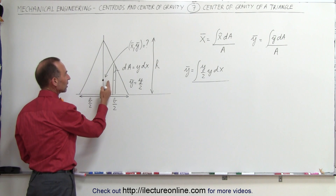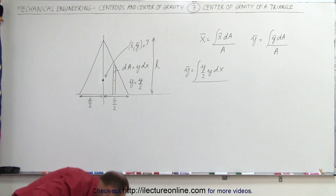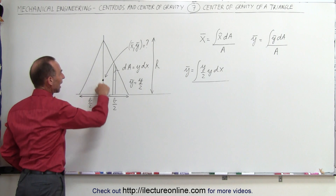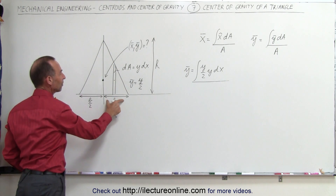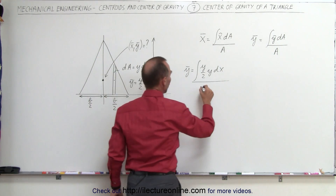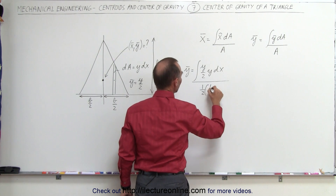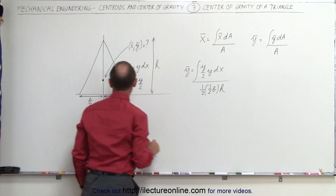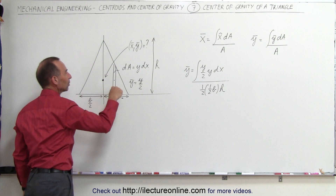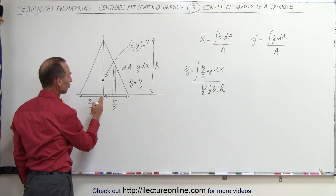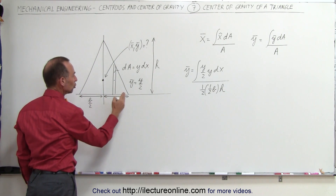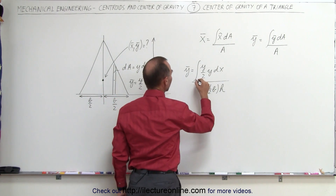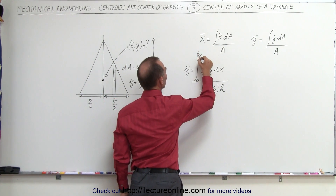Because we have symmetry here, I'm only going to take the area of half the triangle, which is half the base times the height — one half times one half b times h. The limits of integration go from 0 to b over 2 as we integrate over x.